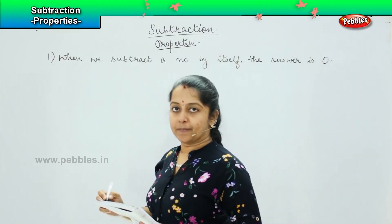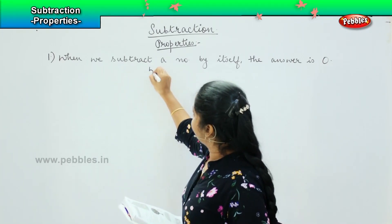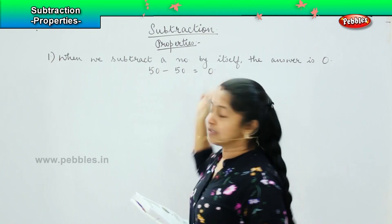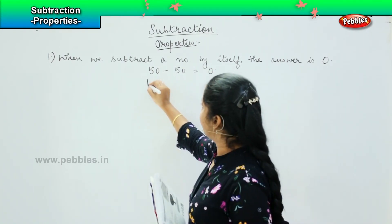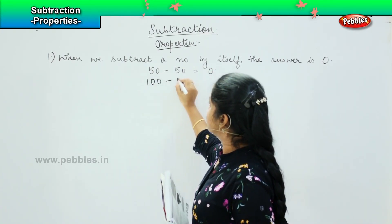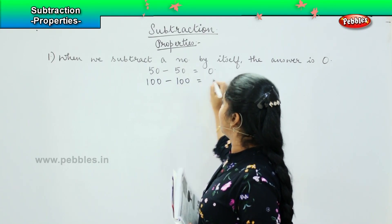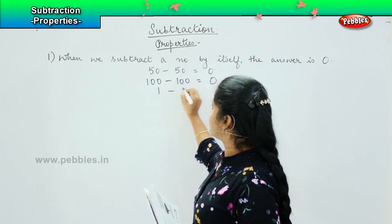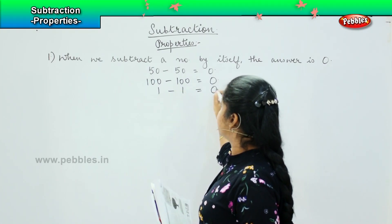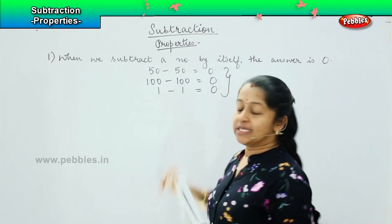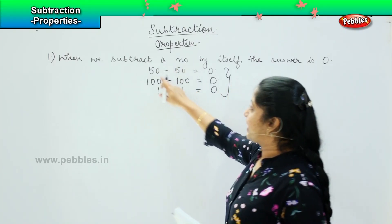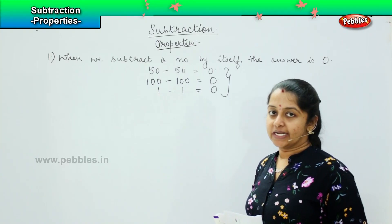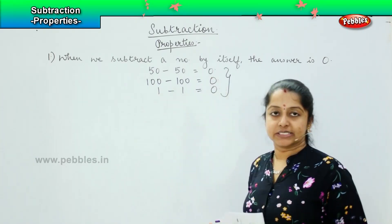For example, if I write fifty minus fifty, the answer is zero. If I write hundred minus hundred, my answer is zero. I write one minus one, my answer is zero. These examples state that if I am subtracting a number by the same number itself, I will be getting my answer as zero.